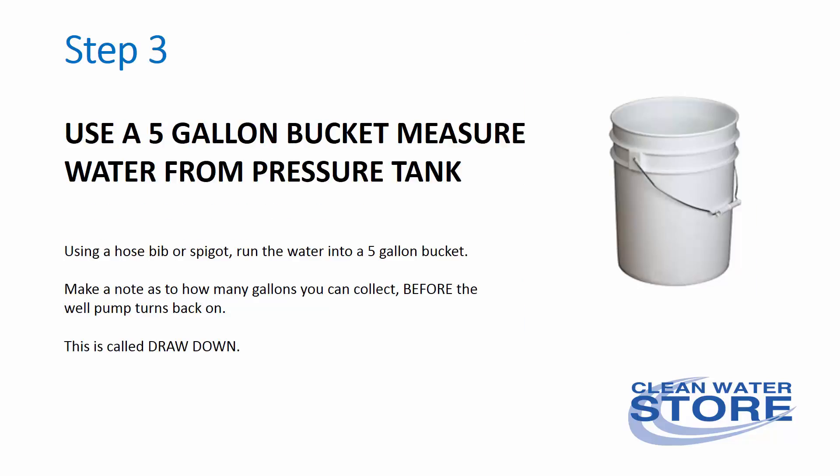Step 3: using a 5-gallon bucket, measure water from your pressure tank. You're using a garden hose and filling up a 5-gallon bucket, noting how many gallons you can collect before the well pump turns back on. This is called the drawdown. You'll hear the pressure switch click and the water rushing, so it's not difficult to hear when your well pump turns back on.